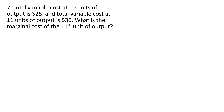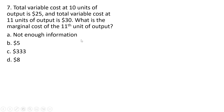Question 7. Total variable cost at 10 units of output is $25. Total variable cost at 11 units of output is $30. What is the marginal cost of the 11th unit? It's just the change in total variable cost going from 10 to 11 units of output — that is a $5 increase. So $5 is the marginal cost.